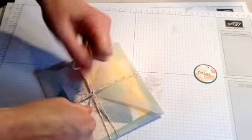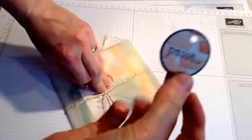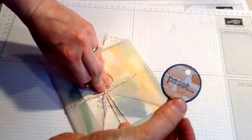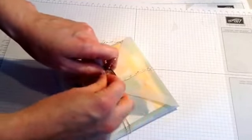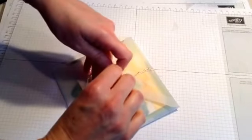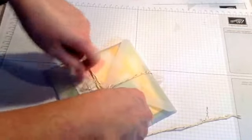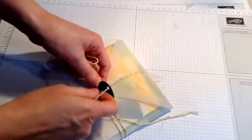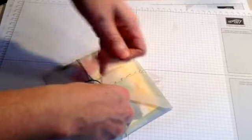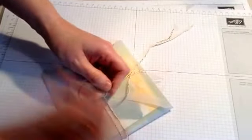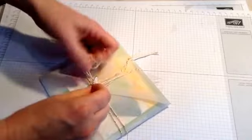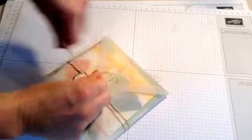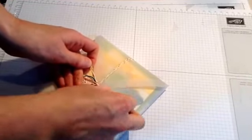I've gone ahead and taken a couple circle punches and made a little tag because we used the Happy Watercolor stamp set today. I wanted to make a little tag that coordinated with it, so I'm going to feed one end of the baker's twine through that hole and then I'm just going to tie a little knot and a bow.